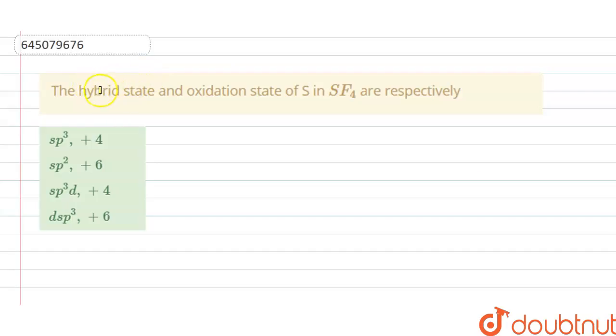Hello students, today our question is: the hybrid state and the oxidation state of S in SF4 are respectively what? Options A, B, C, D are given here. We have to choose the correct option.